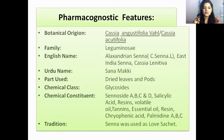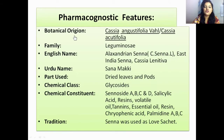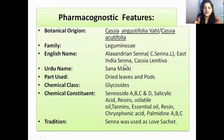The pharmacognostic features: the botanical origin is Cassia angustifolia and Cassia acutifolia — these are the two botanical origins. Family: Leguminosae. English names are Alexandrian Senna and East India Senna, also known as Cassia lentiva. The Urdu name is Sana Makki, and the parts used are the dried leaves and pods.